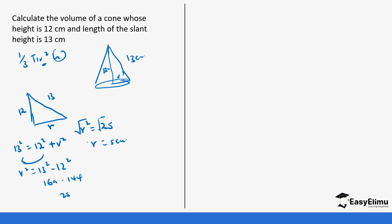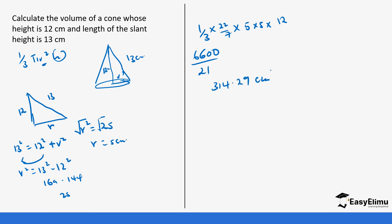Now we have our radius of 5 cm and our height of 12 cm. The formula becomes one-third times 22/7 times 5 times 5 times 12. This works out to 22 × 5 × 5 × 12 = 6,600, divided by 21, which gives approximately 340.29 cm³, so the volume is 340 cm³.